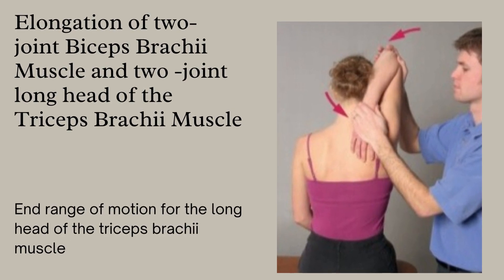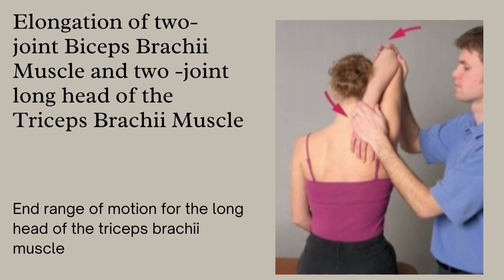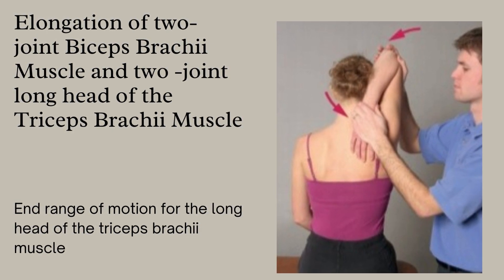After elbow flexion and extension, there comes the elongation of the two-joint biceps brachii muscle and the two-joint long head triceps brachii muscle. Elongation of the two-joint biceps brachii: position the patient's shoulder at the edge of the table and extend the shoulder beyond zero. How to perform elongation of the two-joint long head of triceps brachii is shown in the picture.